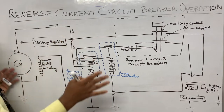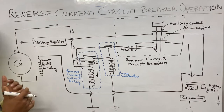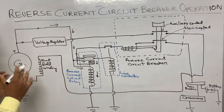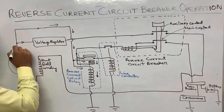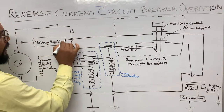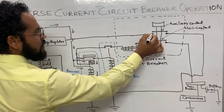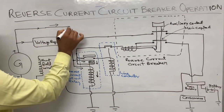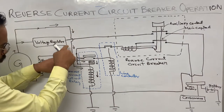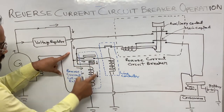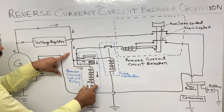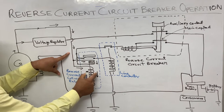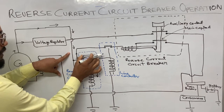Now let us understand how the system works. Initially, whenever the engine is running normally, the generator is producing a regulated positive supply within the tolerance range. The current coming from the generator goes via the voltage regulator path and waits at this point because this contact is still open. The current also follows the path to the voltage coil and current coil of the reverse current cutout relay, and the voltage coil energizes because it gets a grounding path, closing this contact.